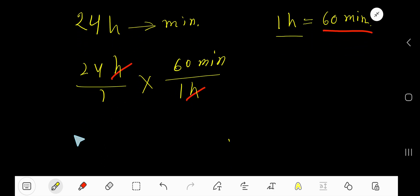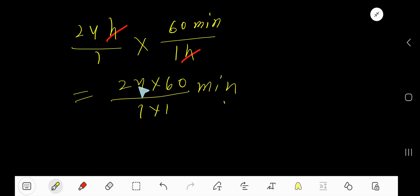Hours cancel with hours. So multiply: 24 times 60 divided by 1 times 1, which gives us minutes. Now multiply 24 with 6.